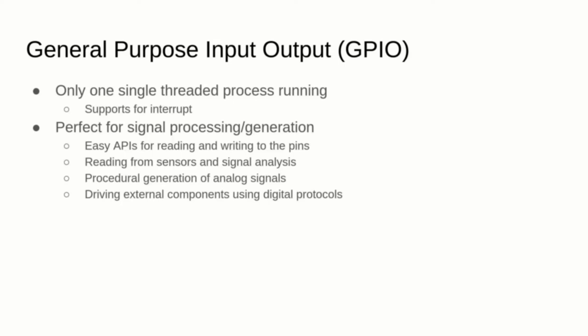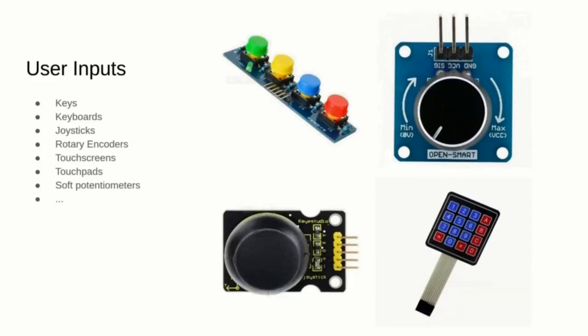Now let's take a look at the most common components you can use with a microcontroller. The first category includes components to read user inputs. Buttons are the simplest — they use a single digital pin and are either pressed or not. Keyboards are slightly more complicated, as their keys are usually arranged in a matrix circuit where a signal is multiplexed in each row and each column is then sampled to check for key presses. In this way, one can read a full N by M keyboard using log2(N) plus log2(M) input/output pins.